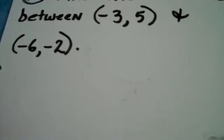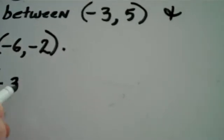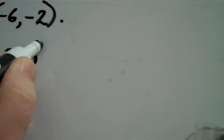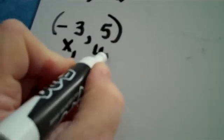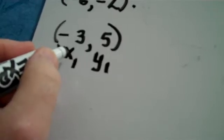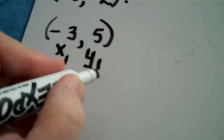The best way to do this, let's take the first point, let's take the ordered pair, negative 3, 5, and let's label it x sub 1, y sub 1, meaning the x-coordinate of point 1, the y-coordinate of point 1.